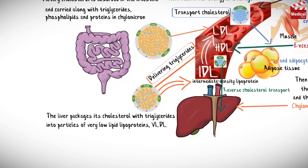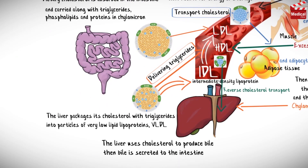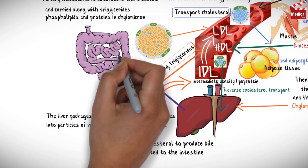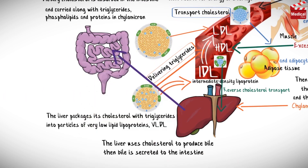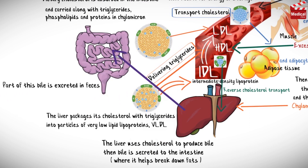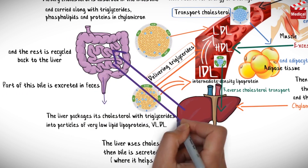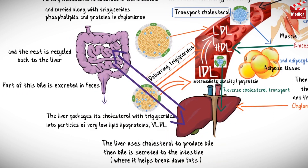The liver uses cholesterol to produce bile. Then bile is secreted to the intestine, where it helps break down fats. Part of this bile is excreted in feces, and the rest is recycled back to the liver.